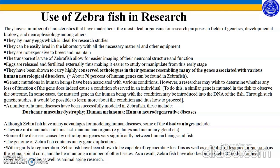These include Duchenne muscular dystrophy, human melanoma, and human neurodegenerative diseases. Although zebrafish have many advantages for modeling human diseases, some disadvantages include: they are not mammals and thus lack mammalian organs; some diseases caused by orthologous genes vary significantly between humans and fish; and the genome of zebrafish contains many gene duplications. With regards to regeneration, zebrafish have been shown to be capable of regenerating lost fins as well as lesioned organs such as the retina, spinal cord, and heart. As a result, zebrafish has also become an excellent model for heart regeneration studies as well as animal aging research.